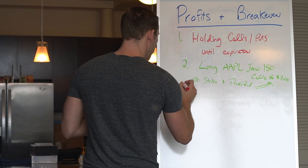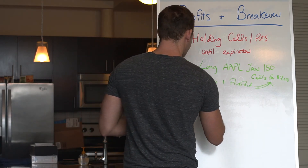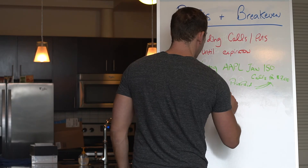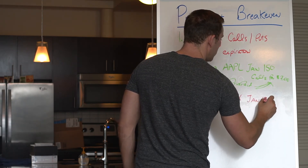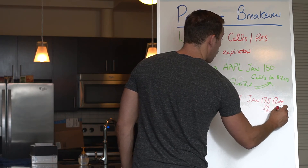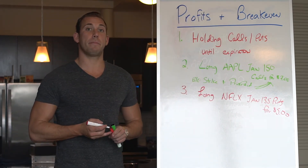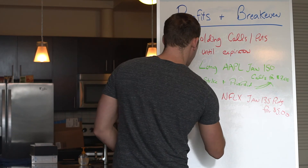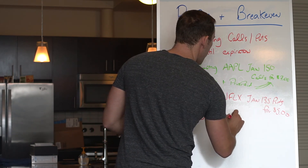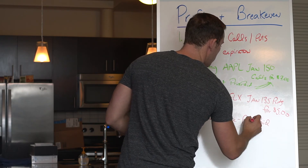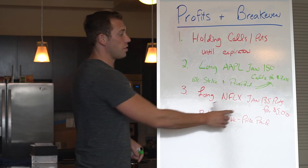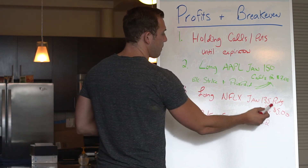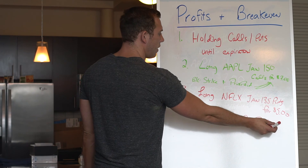For puts, the breakeven is the opposite. We're long the Netflix Jan 135 puts for $5. For calls, we take strike price plus price paid. For puts, it's strike minus price paid. So I have the right but not obligation to sell Netflix at 135 between now and January. If I hold this until expiration, having paid $5, my breakeven would be 130 — 135 minus five is 130.